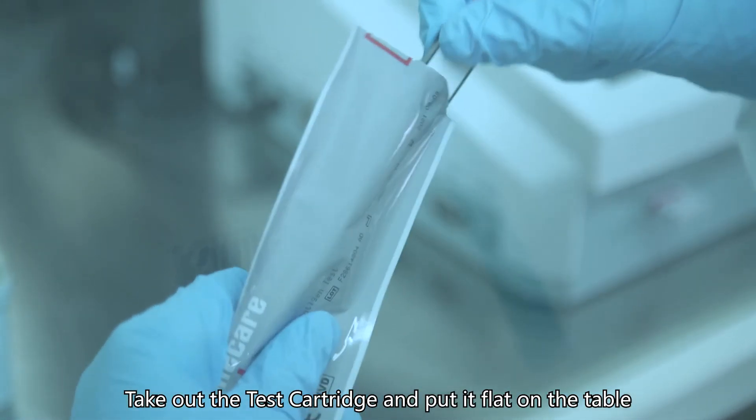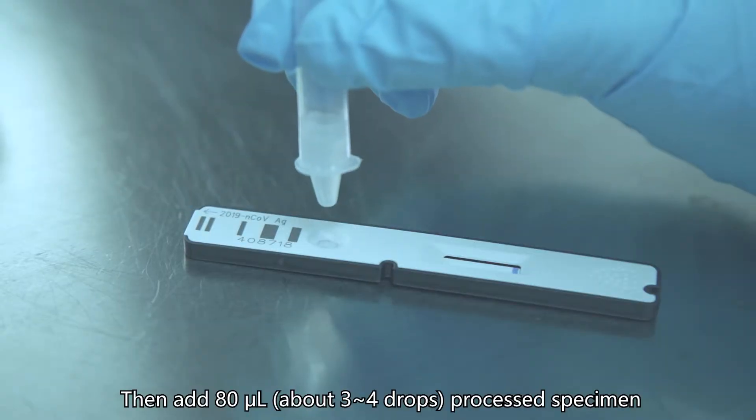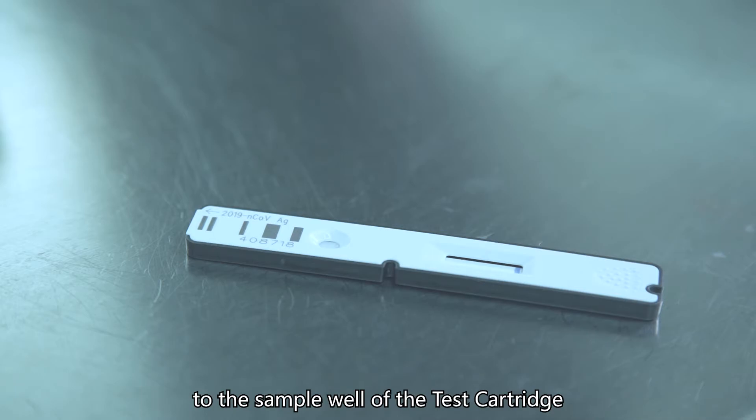Take out the test cartridge and put it flat on the table. Then add 80 microliters, about 3 to 4 drops, of processed specimen to the sample well of the test cartridge.